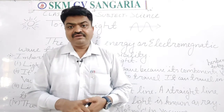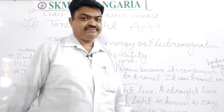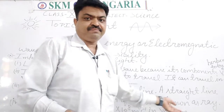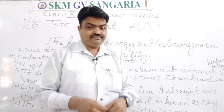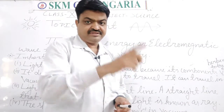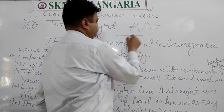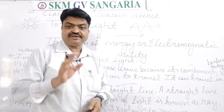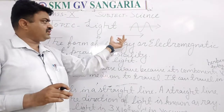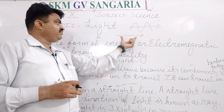The speed of light in vacuum is 3 × 10⁸ meters per second. You should try to learn this value. Because light travels in a straight line, we can represent light rays with the help of an arrow. This arrow represents the ray of light, and with the help of this arrow we can also know the direction from where the light is coming.